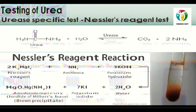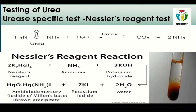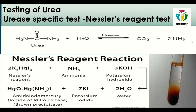The next test is a urea-specific test based upon urease activity, combining two steps. First, react the sample with the urease enzyme. Urease is an enzyme that breaks down urea and releases ammonia and carbon dioxide. Once urea is reacted with the urease enzyme, it releases carbon dioxide and ammonia. This ammonia is then detected by a second test.